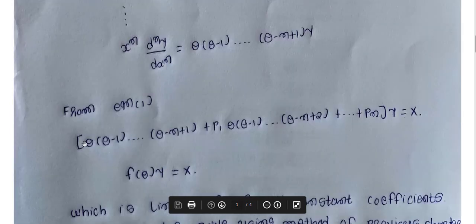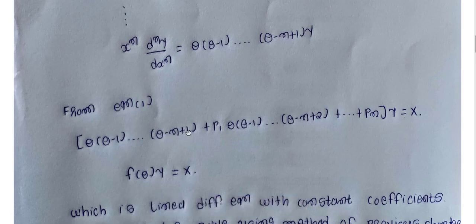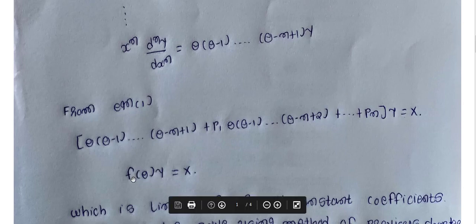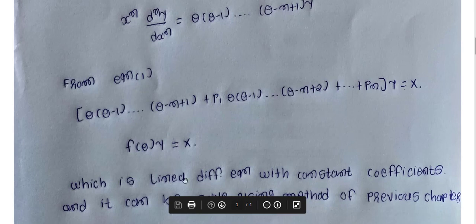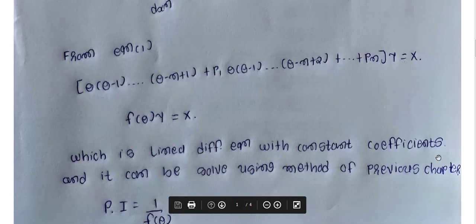We substitute these into equation (1). So equation (1) becomes: [θ(θ−1)···(θ−n+1) + p₁·θ(θ−1)···(θ−n+2) + ··· + pₙ] y = X, which we write as F(θ)y = X. This is a linear differential equation with constant coefficients.